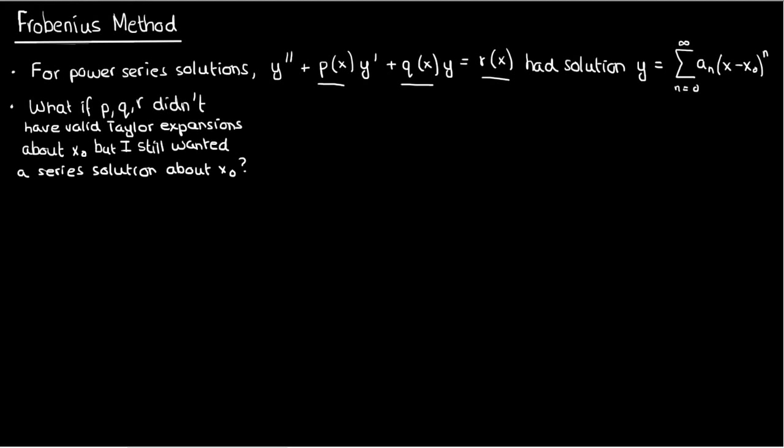What if I was really stubborn? Well I could still do it provided that I make a slight modification to my solution and that my p, q and r weren't too undefined at x = x₀. All I need to do is include an (x - x₀)^r term to the regular series solution where r is some real number. And this is called the Frobenius method.